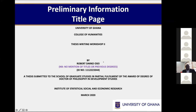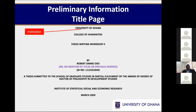In terms of the preliminary information, you first start with the title page, which has several required components — this is a UG requirement. All theses written in the University of Ghana and submitted for a degree should come in this format. At the very top it should start with the institution — the University of Ghana — and the college in which your school is situated, so in my case the College of Humanities.